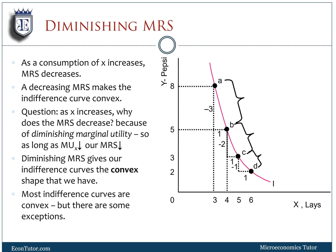As you consume more X, your MUX goes down and MUY goes up, which makes the MRS go down. Moving in this direction, our MRS is diminishing — this is what gives us convexity. You can also download these slides by requesting them on our website. This diminishing MRS gives our indifference curves the convex shape; most indifference curves are convex, but there are some exceptions we'll discuss.